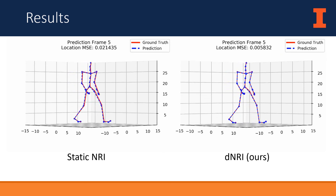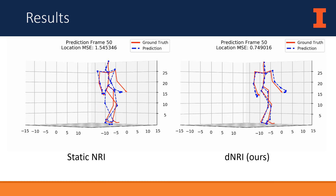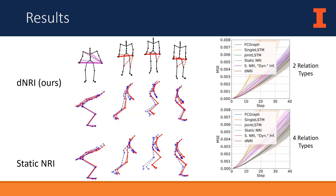A comparison between DNRI and static NRI for the walking subject is shown. For the jumping subject, DNRI's predictions more closely match the ground truth skeleton compared to the static approach. The visualized relations for DNRI indicate that different relations are used when the subject is preparing to jump versus when in the middle of the jump. Static NRI is unable to properly model different phases of motion like this.